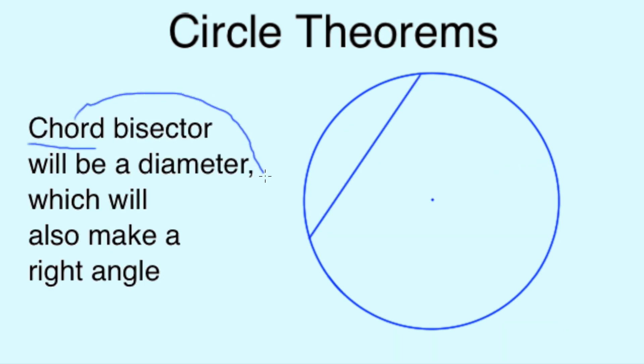If we draw a straight line from edge to edge, whatever angle it may be at, we call it a chord. If we find the midway point and cut it in half with a line edge to edge of the circle, we will always make a diameter, and the angles around the cross will always be right angles.